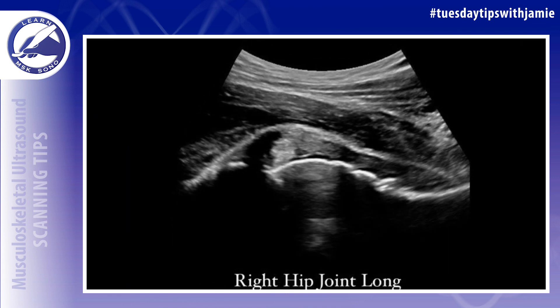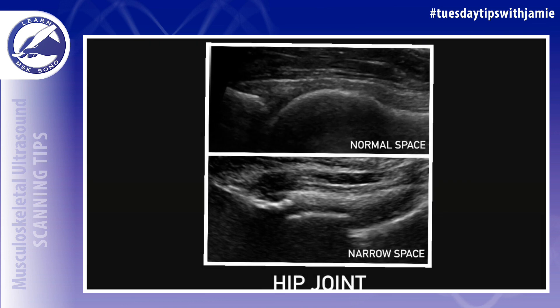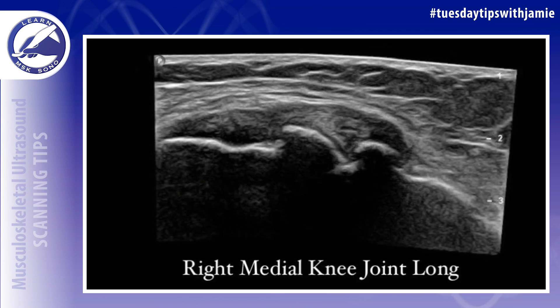I also have some examples of secondary signs associated with joint space narrowing. Like in this example of the hip joint, the joint space narrowing might not be as obvious, but what you can see is extrusion of the labrum, which is a secondary sign — when the space is narrow, it pushes the labrum out of the joint. This image is a side-by-side comparison of the hip joint with a normal space versus one with joint space narrowing.